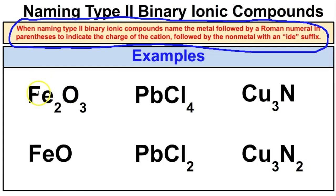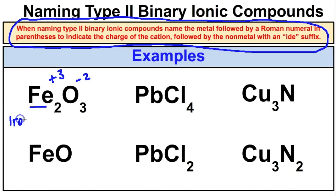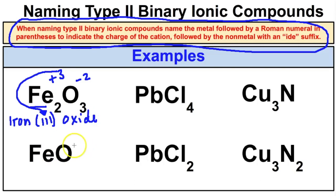We know this is type 2 because iron is a transition metal. Oxide has a negative 2 charge; 3 times negative 2 is negative 6, so 2 times positive 3 gives us positive 6. The systematic name is iron(III) oxide. For the second example, oxide has a negative 2 charge and there is only one of them, so iron must be positive 2 — giving us iron(II) oxide.